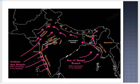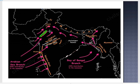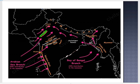The third branch strikes the Saurashtra Peninsula and Kutch, then passes over West Rajasthan and along the Aravallis, causing only scanty rainfall. The Aravallis receive scanty rainfall because they lie parallel to the southwest monsoon winds, which pass alongside them rather than being obstructed. Later, these southwest monsoon winds reach the Punjab plains and mingle with the Bay of Bengal branch, causing rainfall in the western Himalayas.